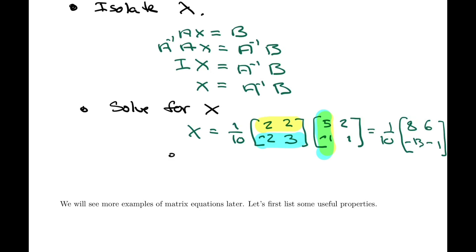So in conclusion, X equals—and here we can multiply in the 1/10th—so 8 over 10, in other words 4 over 5, 6 over 10 so 3 over 5, minus 13 over 10, and finally minus 1 over 10. That's the matrix X we've solved for.